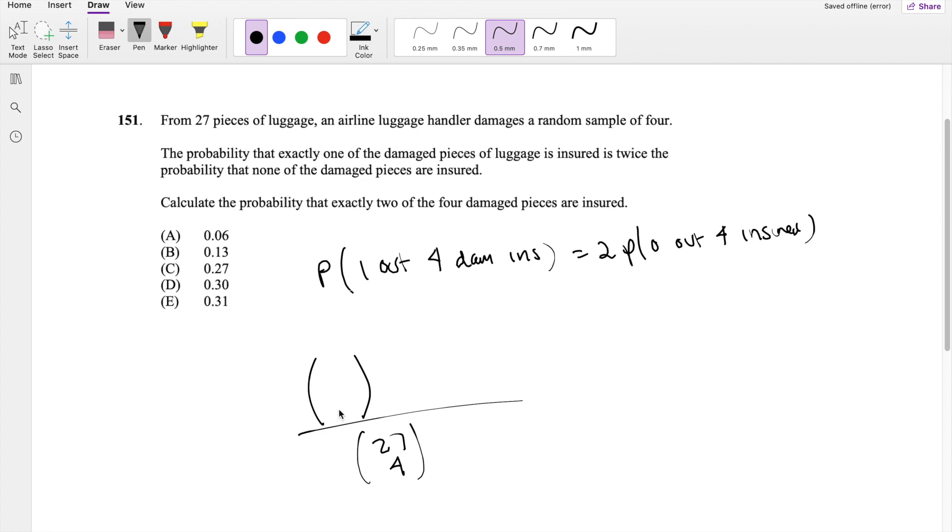So if we're looking at one of them being insured, and I'm going to define R to be the number of insured luggages. Then the number here is going to be R. Out of the insured luggages, we're choosing the probability that one of them is insured, so R choose 1. If we already took R out of 27, then there must be 27 minus R left. And out of that uninsured luggages, we're picking 3. And this is equal to twice the probability that there are 0. So then it's the same formula, but if there is 0 insured luggages, then there must be 4 other that's damaged, divided by the probability of 27 choose 4.